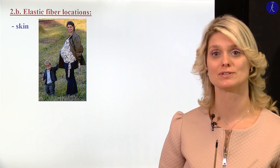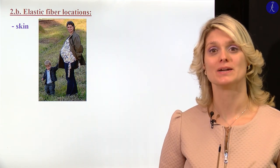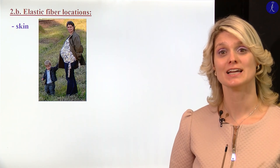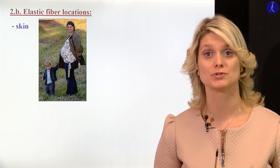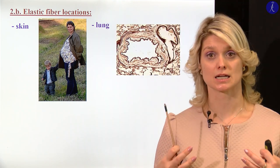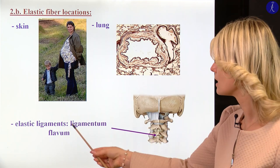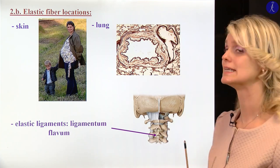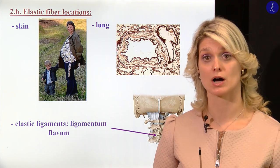In this picture I would like to demonstrate my belly — my skin — because in the skin we have a lot of elastic fibers too. This was one day before the birth of my daughter. Here you can see how much flexibility we have in the skin because of the huge amount of elastic fibers. We also have a lot of elastic fibers in the lung, around the bronchi, and around the alveoli. We have a lot of elastic fibers within some ligaments — for example, between the vertebrae, the ligamentum flavum. Flavum means yellow because of the huge amount of elastic fibers.